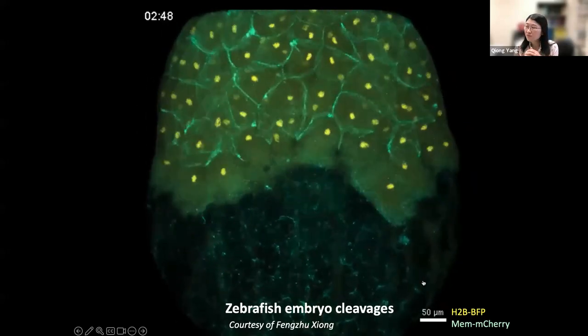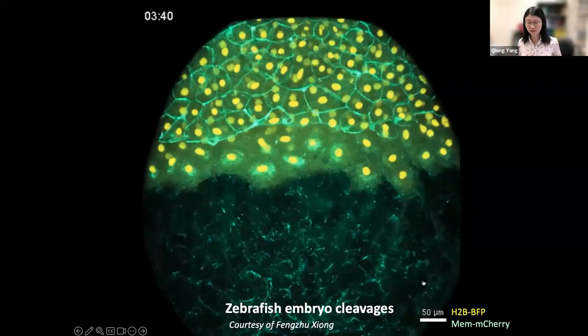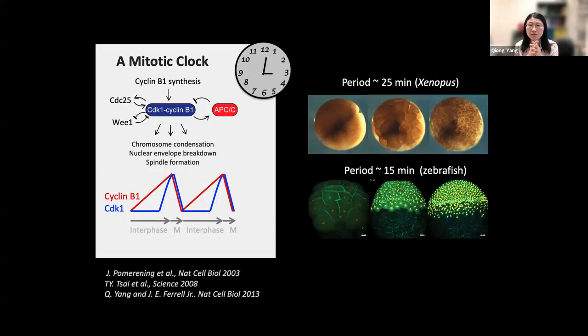You may wonder if there's any timing system that orchestrates all these sophisticated cellular processes. Indeed, over the past decades, studies have identified a group of molecules that can interact with each other to form positive and negative feedback loops that seem to self-sustain these oscillations. Specifically for this case, you have the maternally deposited mRNA cyclin B to translate into cyclin B as the input of the clock, and it binds to cyclin-dependent kinase CDK1.